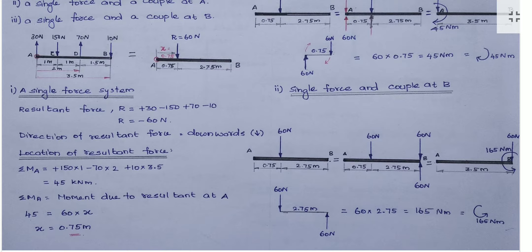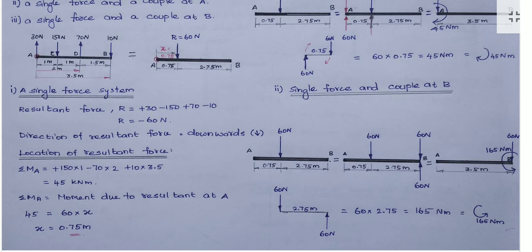Four forces create moments. The 30 N force at A creates no moment because there is no distance — since we are finding the moment at A and it is applied at A, there is no rotation. For the 150 N downward force acting at 1 meter from A: a downward force makes the body rotate clockwise, so we put plus. Force value is 150, distance from the fixed point is 1 meter.